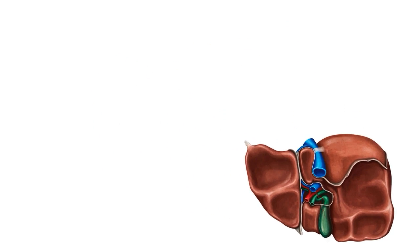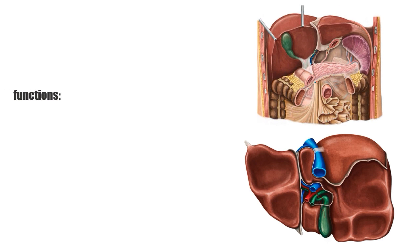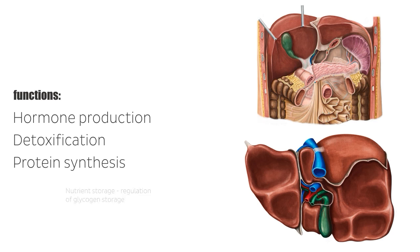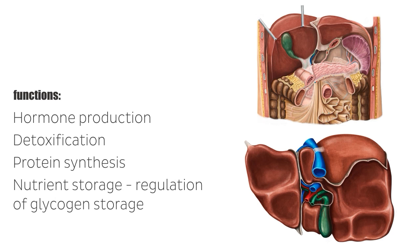Before we begin, I just want to quickly mention a few general points about the liver. As you know, the liver is an essential accessory organ of the GI tract and is the largest visceral organ in the body. It is essential for metabolism and carries out several functions including hormone production, detoxification, protein synthesis, nutrient storage, and specifically regulation of glycogen storage.